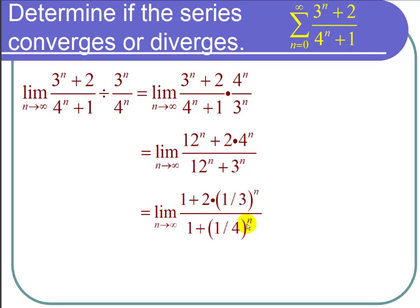Now this is good because 1/3 to the n goes to 0 as n goes to infinity and so does 1/4 to the n go to 0 as n goes to infinity. So I end up with 1 plus 0 over 1 plus 0 when I plug in and that of course is just 1.